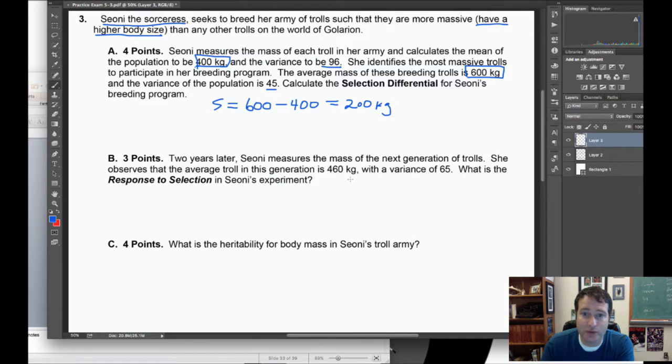Moving on to part B, two years later Sione measures the mass of the next generation of trolls. The average troll in this generation is 460 kilograms with a variance of 65. What is the response to selection? In this case we're comparing differences of means. Generation 2 was 460, generation 1 was 400. So 460 minus 400, we get a response to selection or a change in the population mean of 60 kilograms.